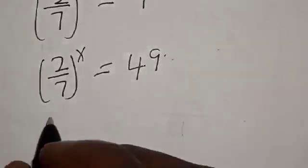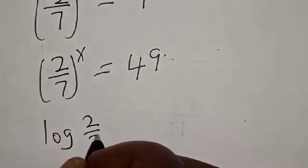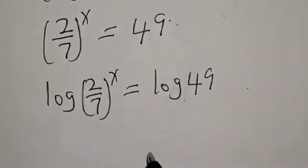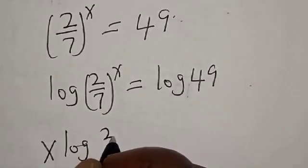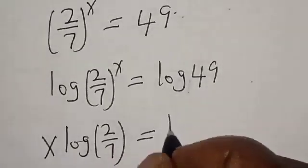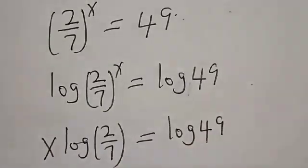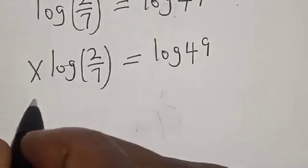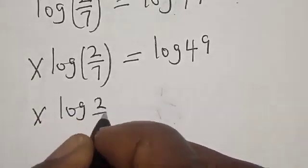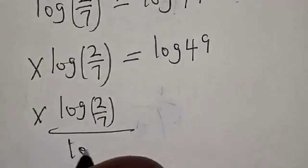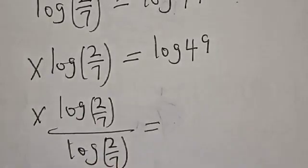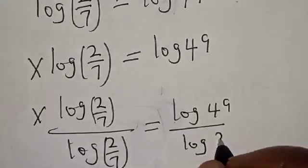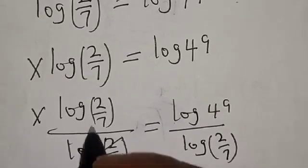Let's take the log of both sides. Then we have log of 2 over 7 raised to power s is equal to log 49. Now, let's divide both sides by log 2 over 7. We have s times log 2 over 7 divided by log 2 over 7 is equal to log 49 divided by log 2 over 7. This one will cancel this.